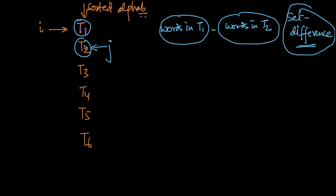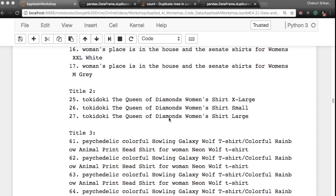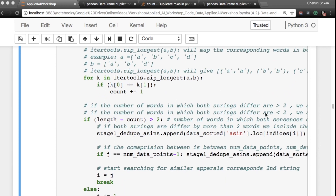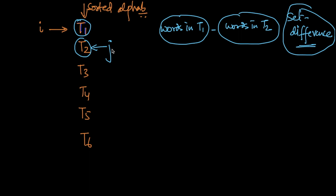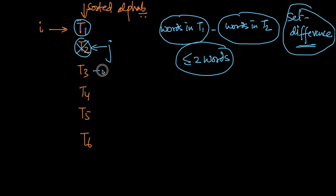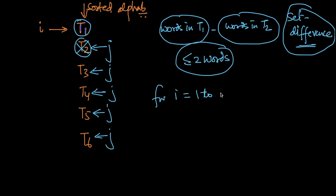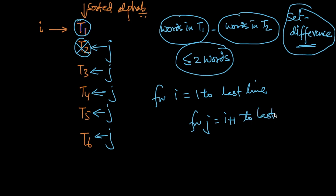If they differ in only one or two words — less than or equal to two words — we deem this a duplicate and remove it. Then we increment j and check again. Once we've compared title i with everything else, we move i forward and compare from j = i+1 again. This is a nested for loop — for i from 1 to the last index, for j from i+1 to the last index, performing the comparison.